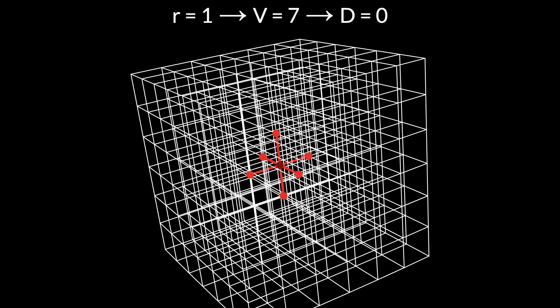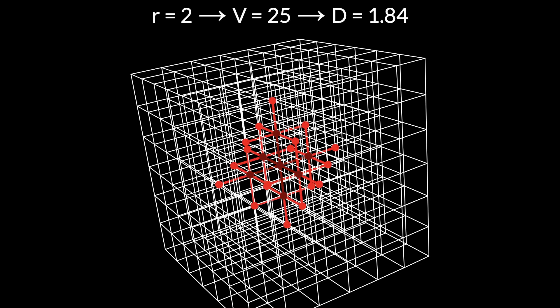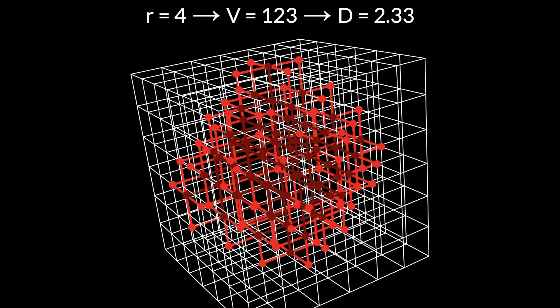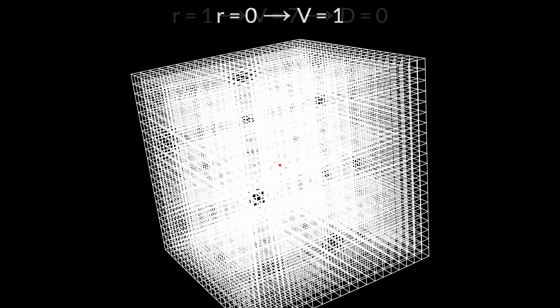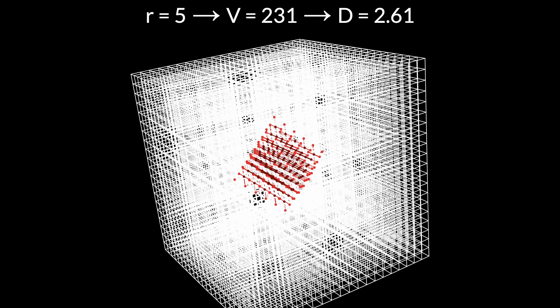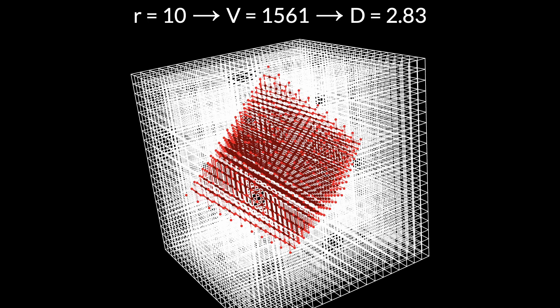As ever, we start out with the wrong answer because the graph is not continuous. r equals 1 gives us v equals 7, d equals 0 — obviously wrong. But we soon start trending towards the right answer. r equals 3 gives us v equals 63, d equals 2.28. Until that is we run into the edges — r equals 5 gives us v equals 195, d equals 2.07. We didn't get to d equals 3 because we didn't go big enough. With a bigger three-dimensional grid: r equals 5 gives v equals 231, d equals 2.61, and r equals 10 gives v equals 1561, d equals 2.83.